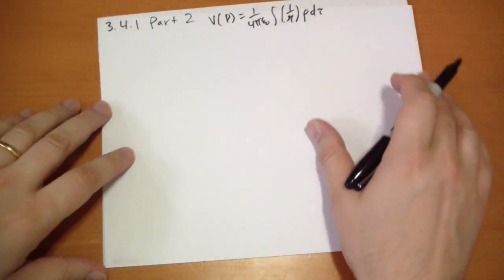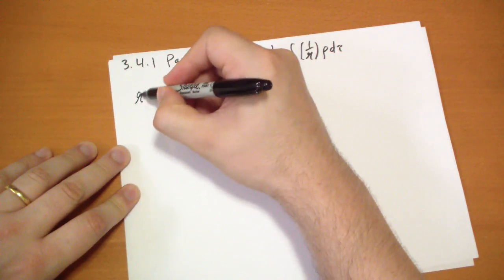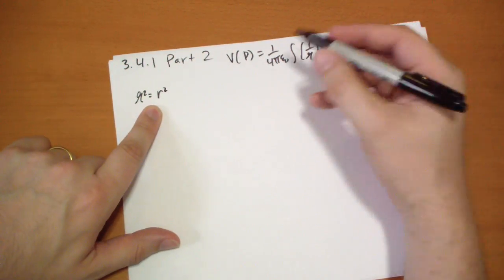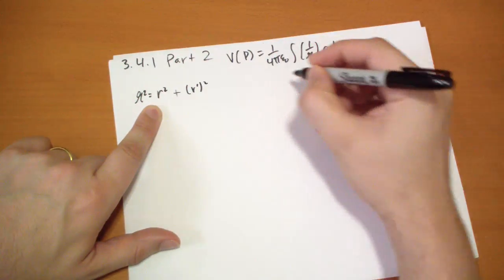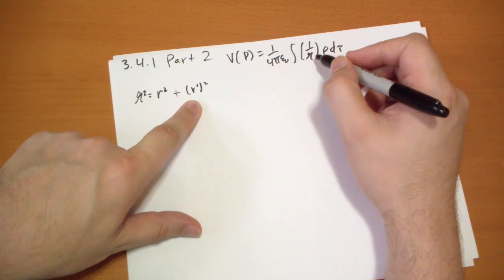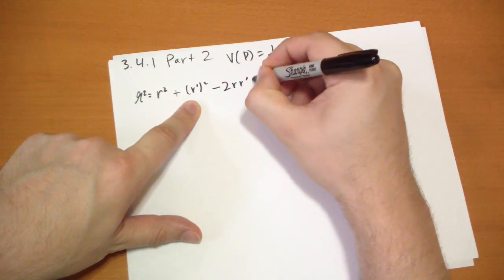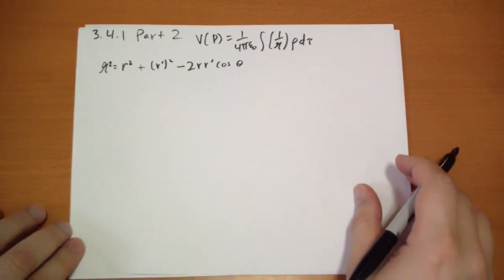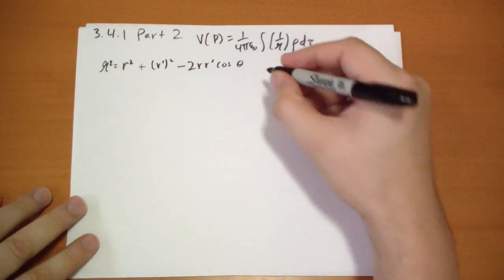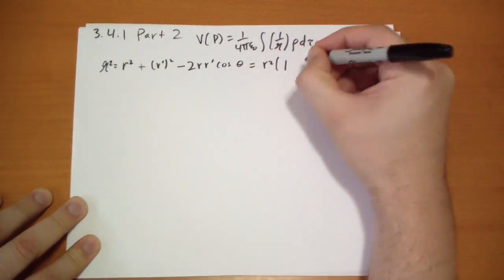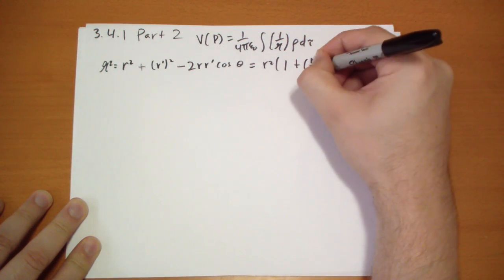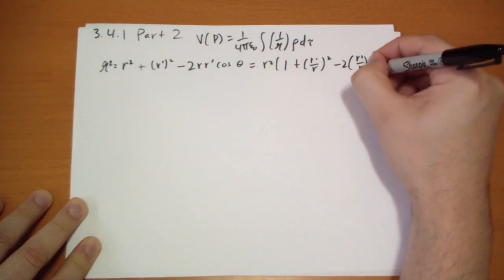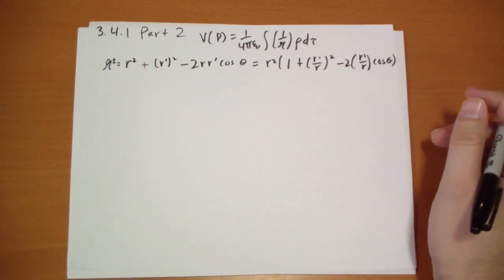We can rewrite curly R squared using law of cosines as r squared, which is the distance to the point from the origin, plus r prime squared, which is the distance from the origin to the bit we're integrating, minus 2 r r prime cos theta, which is the angle between these two vectors. Rewriting it by extracting out the r squared, we get 1 plus (r prime over r) squared minus 2 (r prime over r) cos theta.